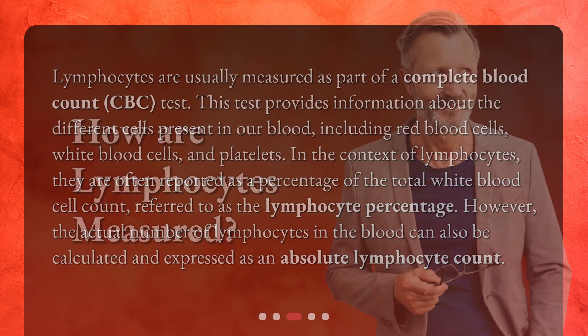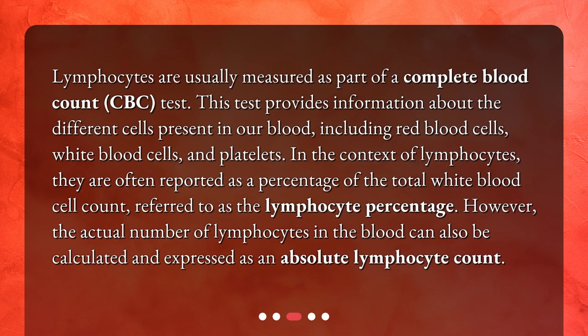Lymphocytes are usually measured as part of a complete blood count (CBC) test. This test provides information about the different cells present in our blood, including red blood cells, white blood cells, and platelets. Lymphocytes are often reported as a percentage of the total white blood cell count, referred to as the lymphocyte percentage. However, the actual number can also be expressed as an absolute lymphocyte count.